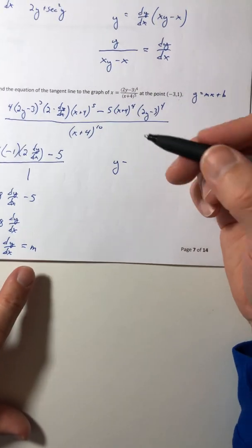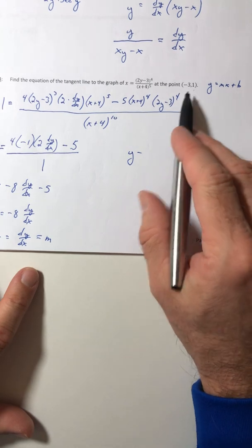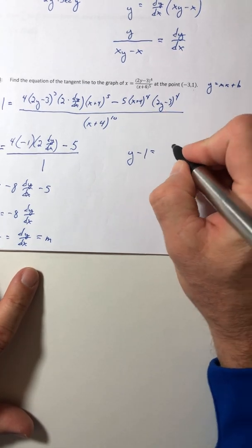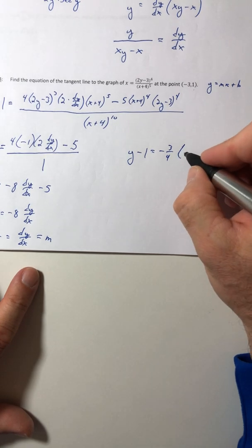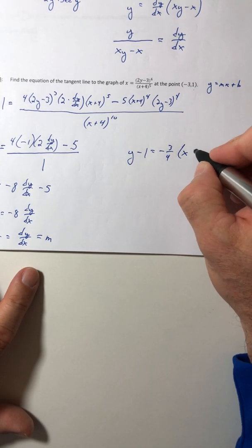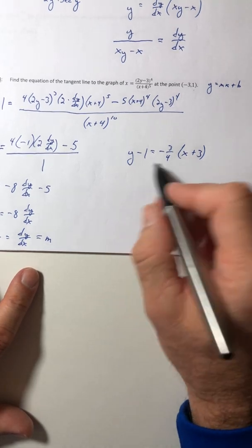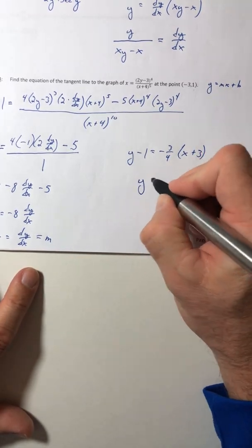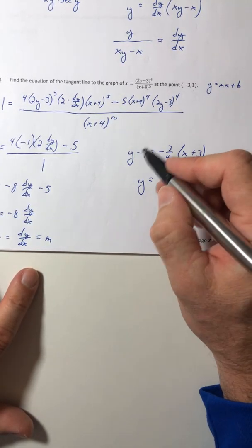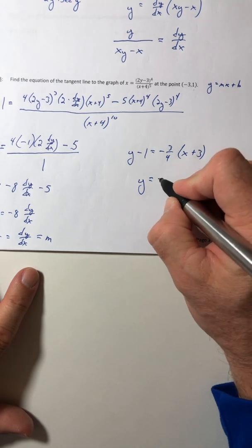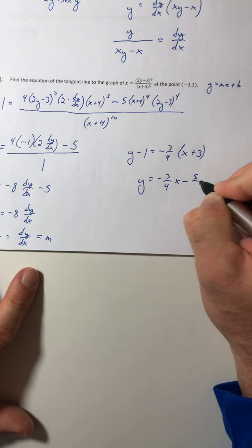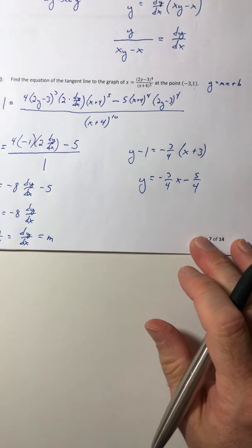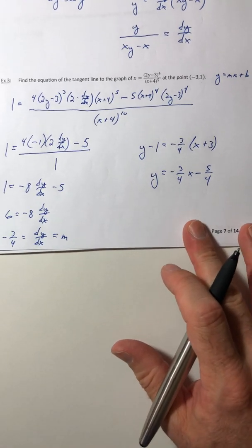So just use point-slope formula to finish it and get your line. So y minus 1 equals negative 3 fourths times x plus 3. And then just solve for y. So distribute, and then we'll add the 1 over to the right. So negative 3 fourths x minus 5 fourths. So there is the equation of your tangent line.